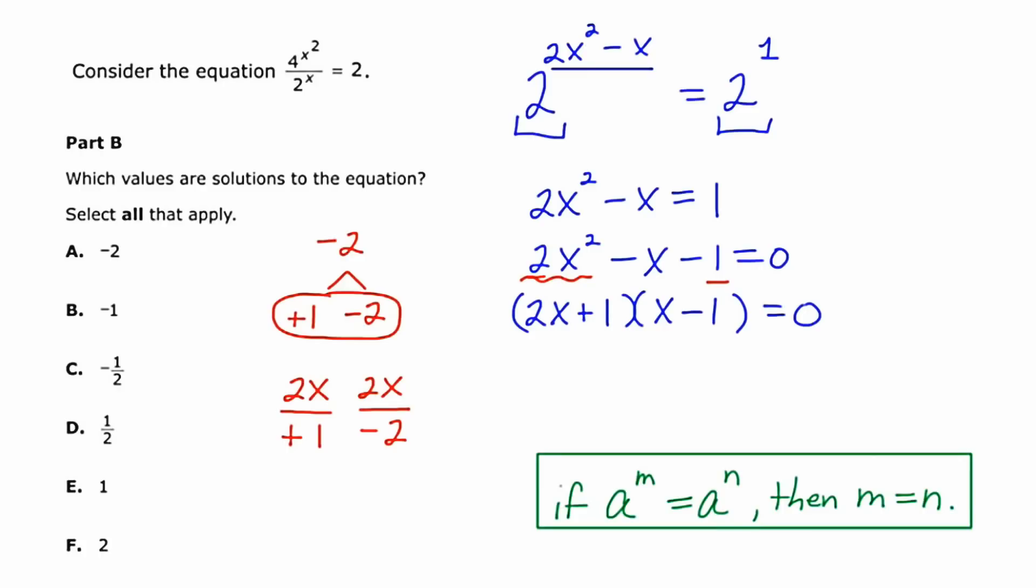Using the 0 product property, I'm going to set each of these factors equal to 0 to solve for x. And in the first case, I end up getting x equals negative 1 half. And in the second case, I end up getting x is equal to 1. Both of these answers are on the list. x equals negative 1/2 is answer choice C, and x equals positive 1 is answer choice E. We might want to think just for a moment about checking. Is there any reason to think that either of these answers wouldn't work? Is it going to end up with a situation where it is undefined? I don't think it is, so I'm going to stick with these two answers. The answers are C, negative 1 half, and E, 1.